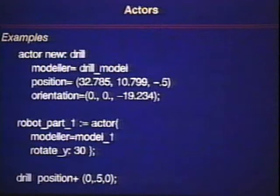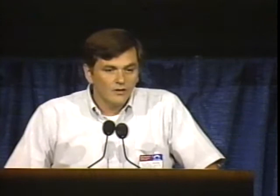The modelers describe the shape of a particular actor. The actors describe the geometry and contain the positional and orientation information in the scene; usually they're controlled by an analyst. The types of properties they have include position, orientation, color, and visibility. Many times we describe their behavior as a function of time. In a sample from our interpreter, we create a new actor called Drill, tell it its modeler is a drill model, set its position to a Cartesian value, and its orientation. We then describe another actor called Robot Part 1, and can increment the drill's position by 0.5 in the Y dimension.